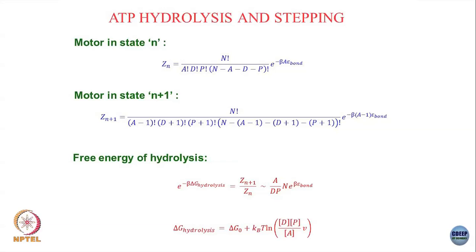I am mostly focused on the ATP dependence — how does this hydrolysis, and therefore the barrier crossing rates, depend on the ATP concentration. Taking this formula, delta G hydrolysis is some delta G naught which subsumes all other terms, plus k_B T log of the concentration of ADP times concentration of phosphate divided by concentration of ATP, where V is the solution volume.